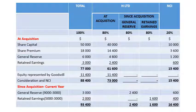In the analysis of equity, we do not take the figures at the balance sheet date but at the acquisition date. General reserve at acquisition is $6,000 and retained earnings is $3,000. The total net equity is $77,000; H Limited's 80% share is $61,600 and NCI at 20% is $15,400. The consideration paid was $73,000.